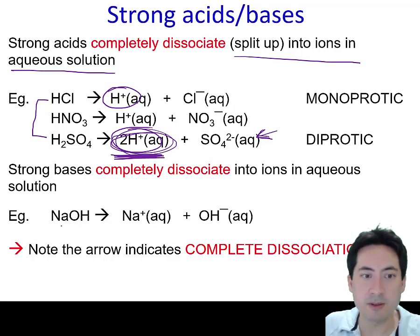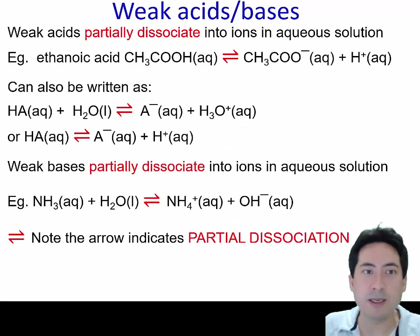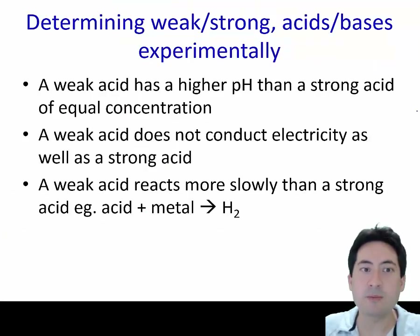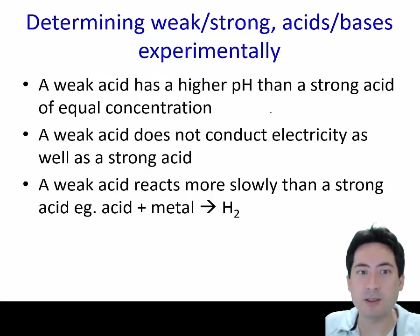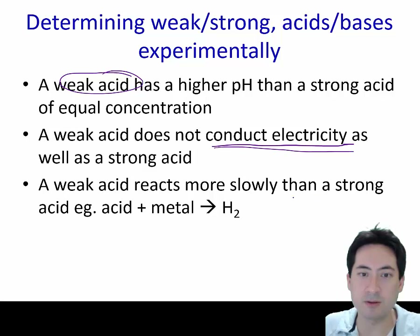Certain bases also completely dissociate, creating a strong base. Weak acids and bases partially dissociate into ions in aqueous solution — here's the double arrow. Examples include ethanoic acid and ammonia. The weak acid will have a higher pH than a strong acid at the same concentration because not all of the hydrogen ions have dissociated, so conductivity and reactivity will also be lower.